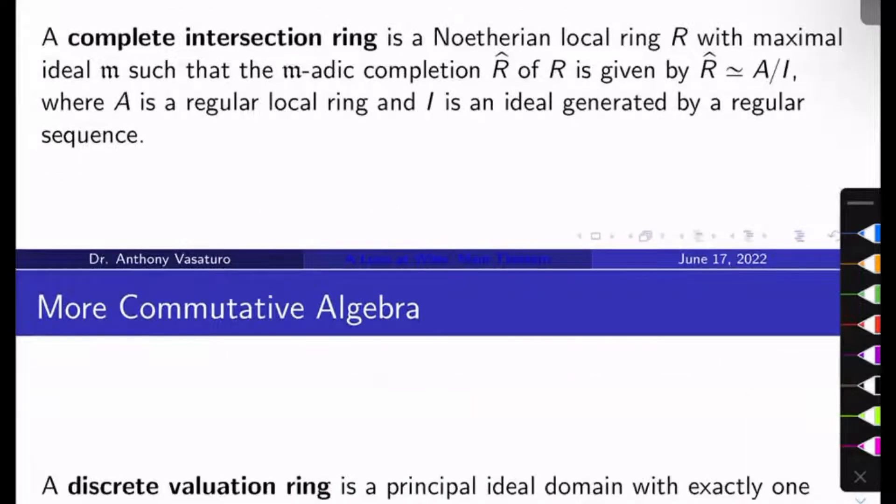Let's put this all together. A complete intersection ring is a very nice, organized, well-behaved type of ring. It's a Noetherian local ring R with maximal ideal M such that when you complete it, giving you R-hat with respect to its maximal ideal M, it's isomorphic to A mod I, where A is a regular local ring and I is an ideal generated by a regular sequence.